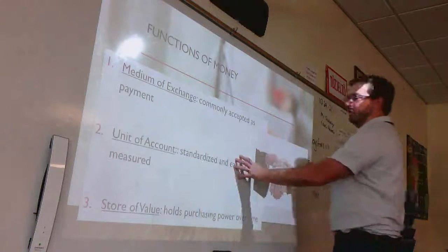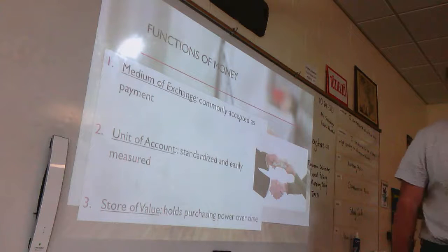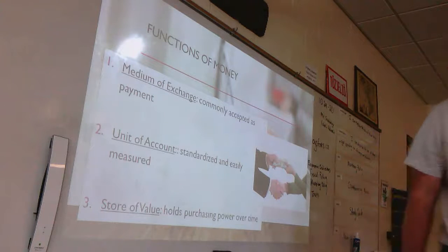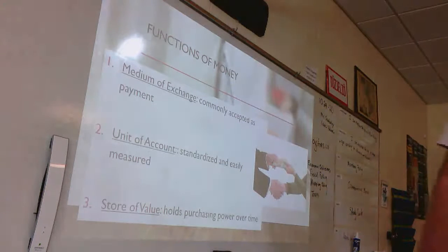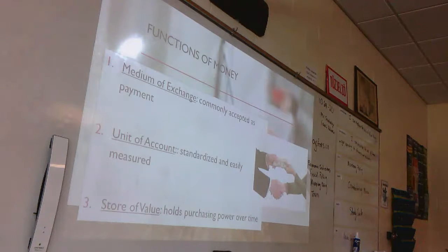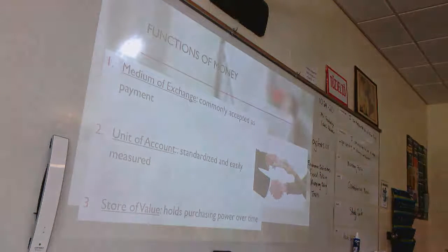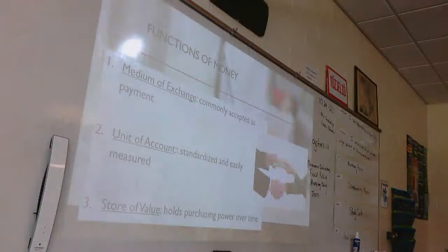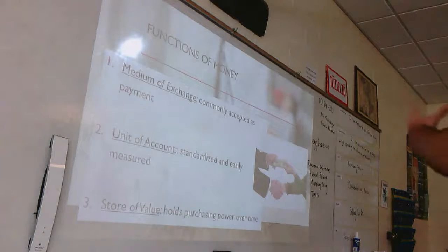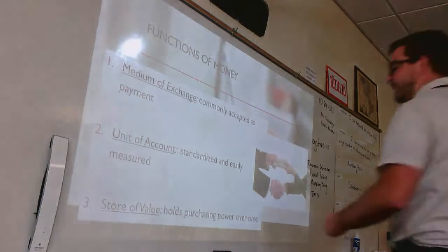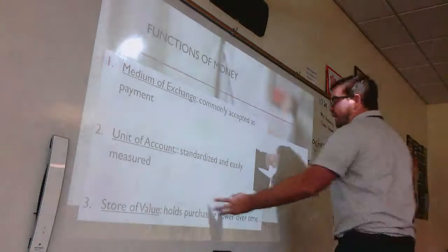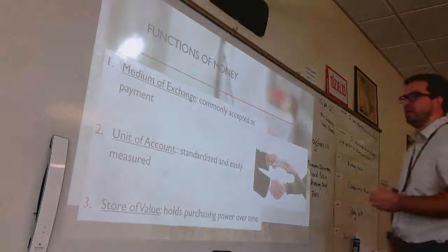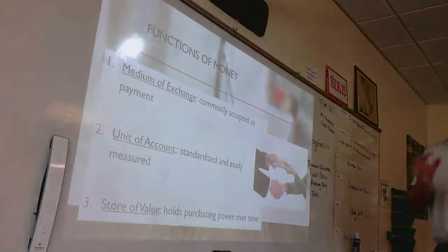Money has to be divisible — we have to be able to break it up. Twenty nickels makes a dollar, four quarters make a dollar, ten ones make a ten. We can buy expensive things like a car or cheaper things like a gumball. We have to be able to break up that currency.